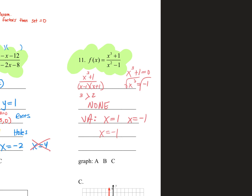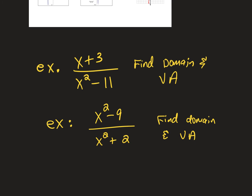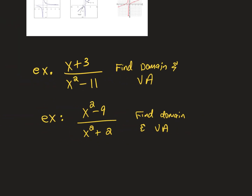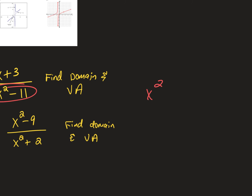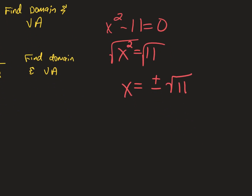Are there any holes? Nope. Just pay attention: I don't want you guys to get surprised. Factoring is all fair game. If I asked for the domain for something like x squared minus 11 in the denominator, you'd set it equal to zero, giving x squared equals 11, so x equals plus or minus the square root of 11. Your vertical asymptotes would be at plus or minus square root of 11, and your domain would be negative infinity to negative square root of 11, union negative square root of 11 to positive square root of 11, union positive square root of 11 to infinity.